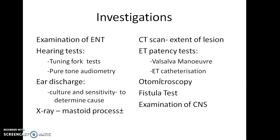Eustachian tube patency tests can be done by Valsalva maneuver and Eustachian tube catheterization. In the Valsalva maneuver, you close your nostrils, close your mouth, and try to blow out — if air enters the middle ear, the Eustachian tube is patent; if not, there is blockage. Otomicroscopy involves visualizing the middle ear cavity through the external auditory canal using an instrument. The fistula test involves compressing the tragus of the external ear — increased pressure in the canal will stimulate the inner ear through any perforation, causing nausea, vomiting sensation, or vertigo, and nystagmus can be noted in the patient's eyes. A positive fistula test indicates perforation of the tympanic membrane.